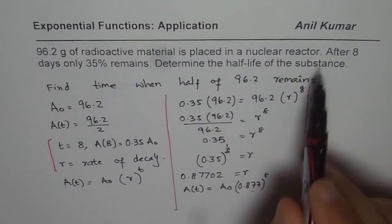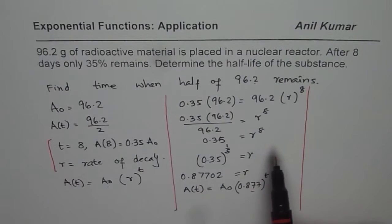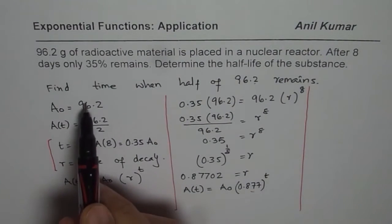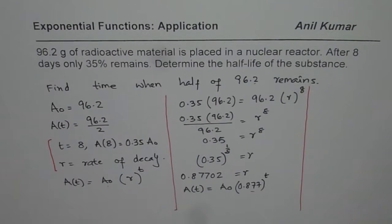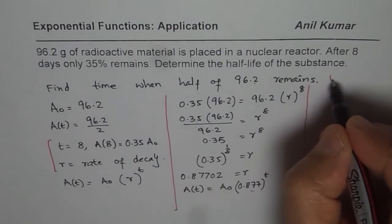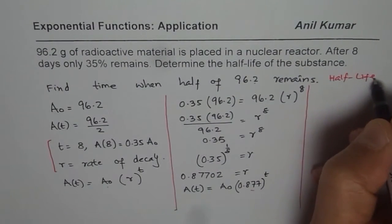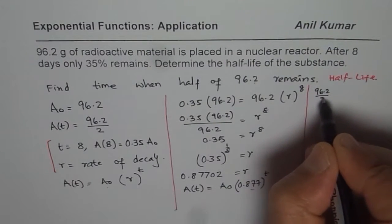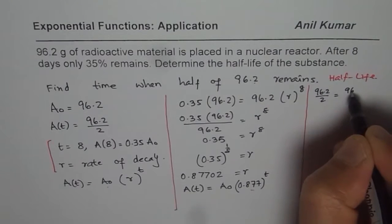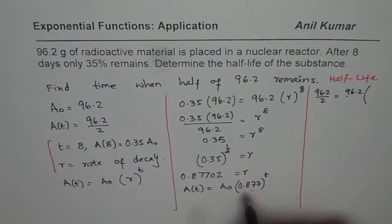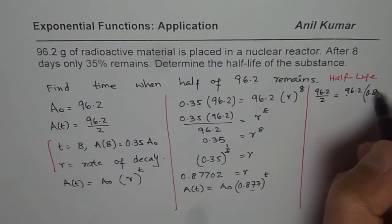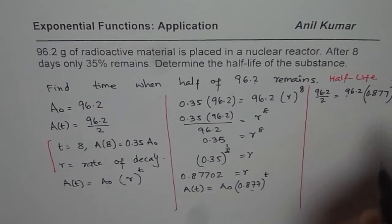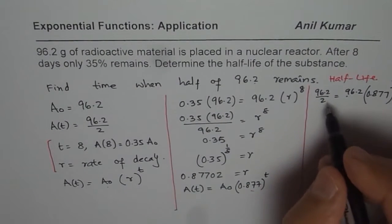Now we need to find half-life of the substance. Half-life means when will the final amount be half of 96.2. So let us rewrite and find the half-life. That means we are left with 96.2 divided by 2. We started with 96.2 and rate of decay is 0.877 to the power of t. So we need to find what that t is.